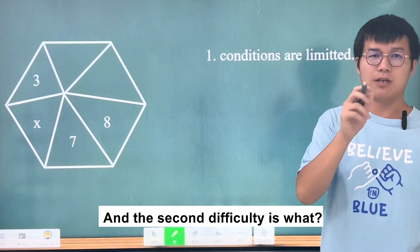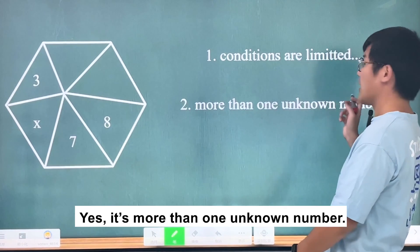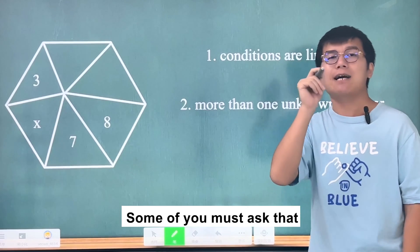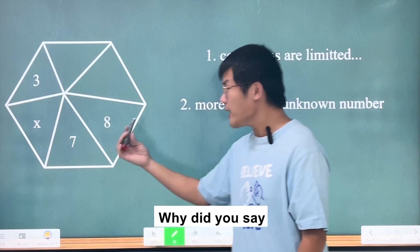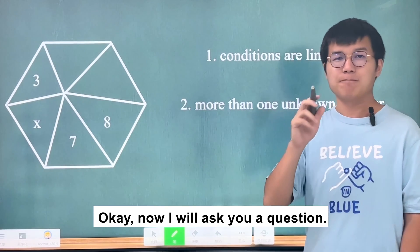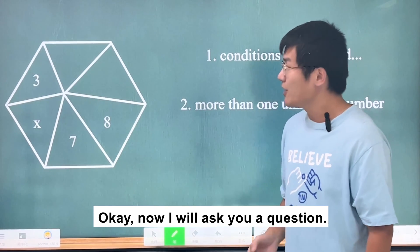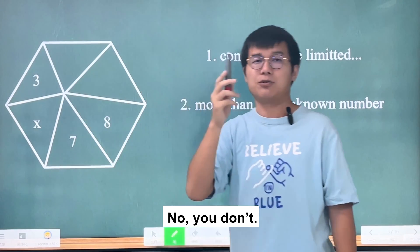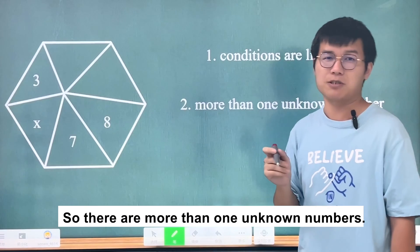The second difficulty is that there is more than one unknown number. Some of you might ask: there's only one unknown number x, so why are there more than one? Well, do you know the areas of these other two triangles? No, you don't. So there are more than one unknown numbers.